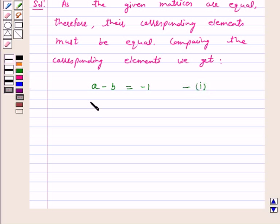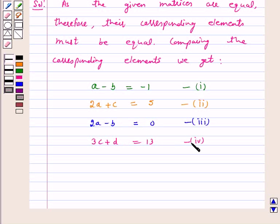Again, 2A plus C equals 5. Let us take it as equation 2. 2A minus B equals 0. Let us take it as equation 3. And again, 3C plus D equals 13. Let us take it as equation 4.